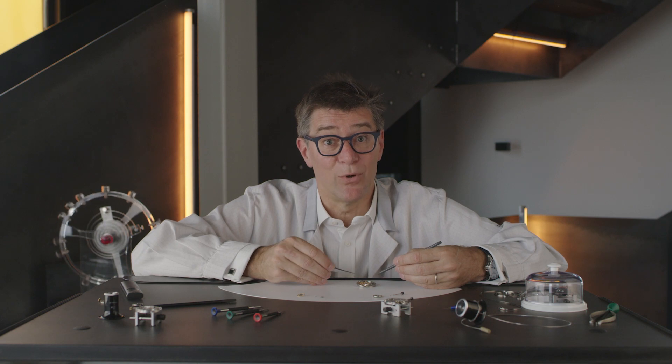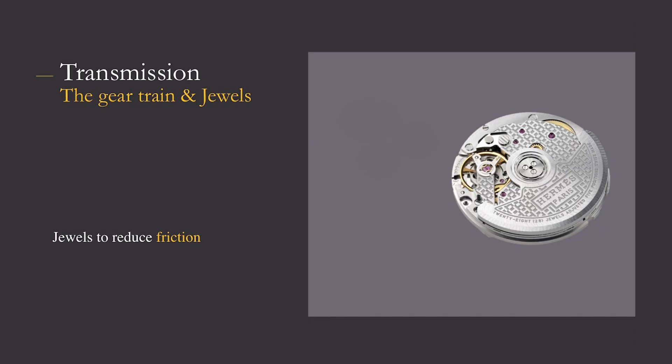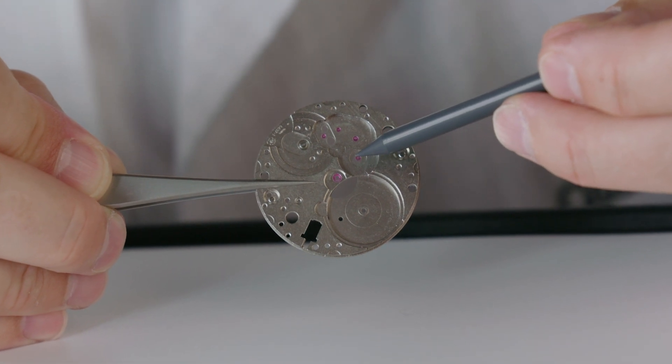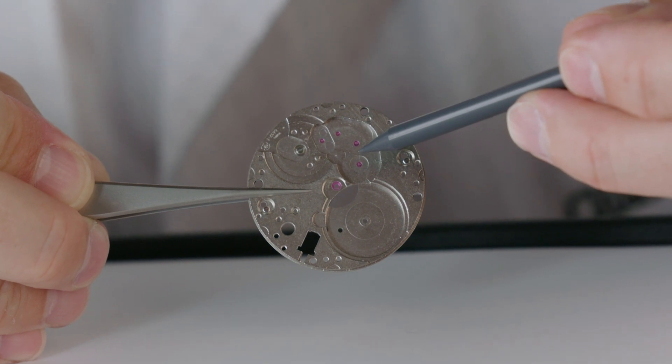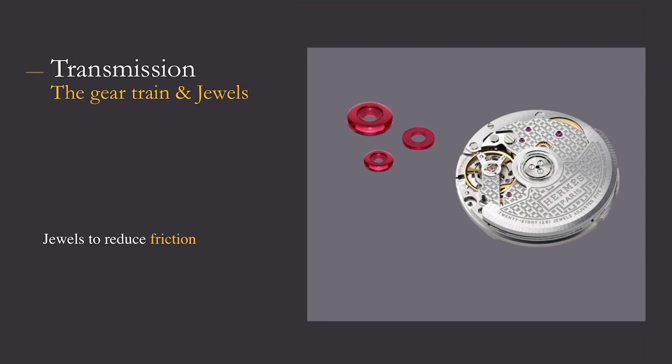There is a functional reason for the jewels in a watch. Concretely, it is to reduce the friction between components and also to avoid wear of the components. In a watch movement, jewels are made of synthetic ruby. A simple manual winding movement has 15 to 17 jewels.